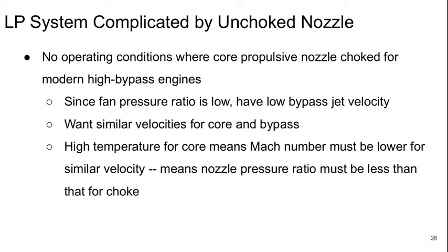The low-pressure system is much complicated by the unchoked nozzle at the end of the core flow. There's basically no operating condition where the core propulsive nozzle is going to be choked through a modern high-bypass ratio engine. Since the fan pressure ratio is low, we're going to have low-bypass jet velocities, and we want similar velocities for the core and bypass.